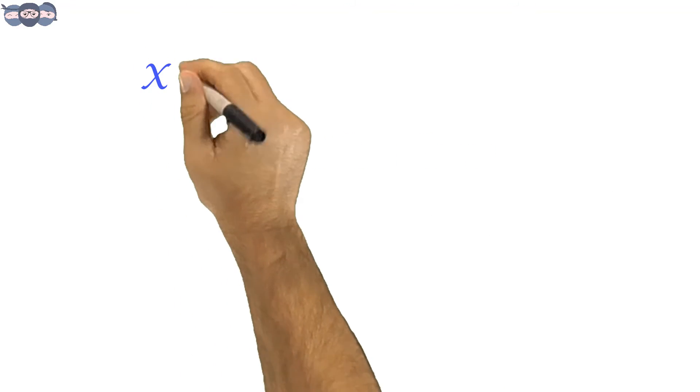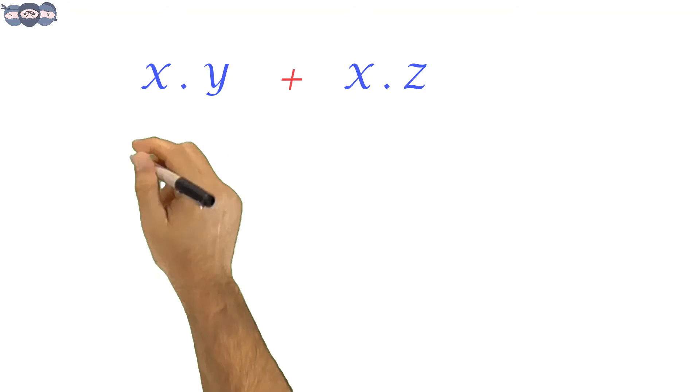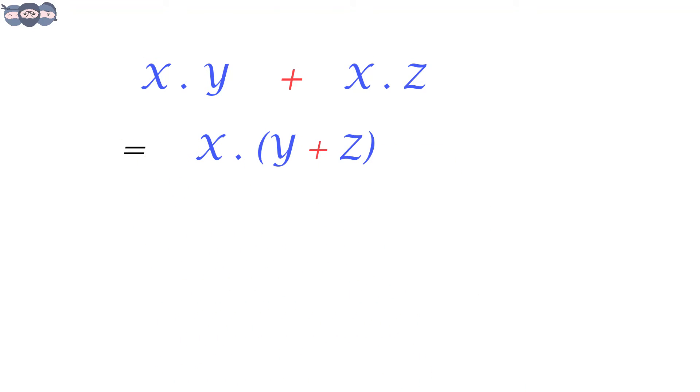Consider the term X and Y. Another expression is X and Z. Let's solve both of them. Now we see that X is distributed to both the expressions. We take X outside the parenthesis. Thus, Boolean algebra follows distributive law.